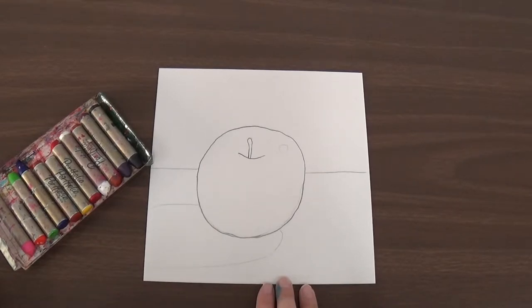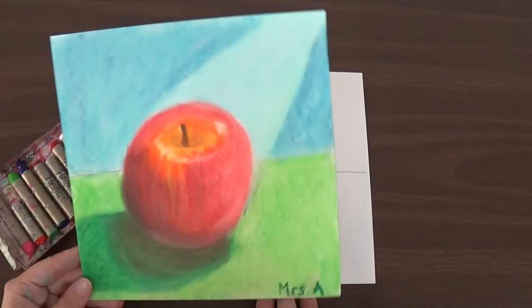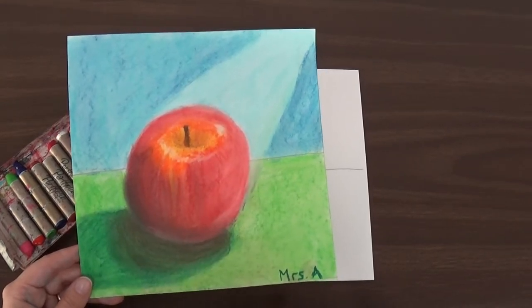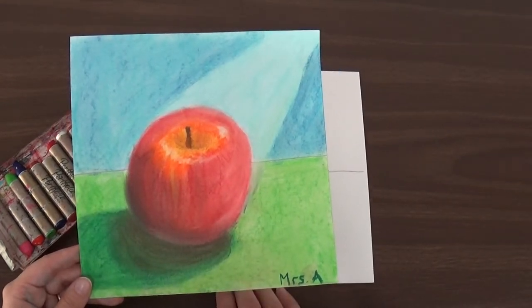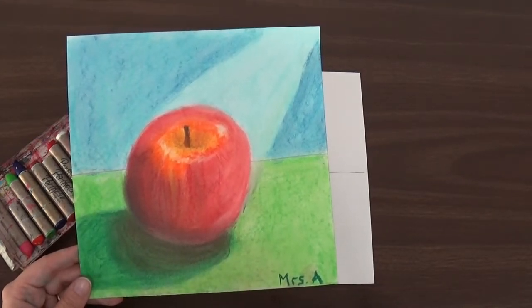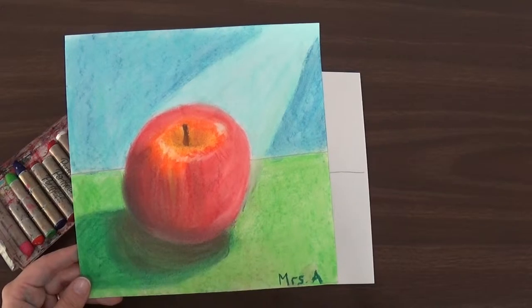We are going to use a lot of the same ideas as we did for the chalk pastel ones. We are going to draw our shadows and our highlights just like we did before. But this time it is going to be a little different because we are not going to be blending with our fingers like we did for this one. We are going to be using the oil pastels to make everything.